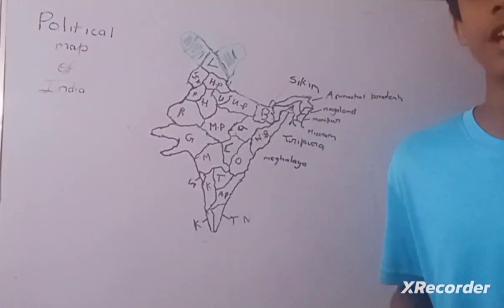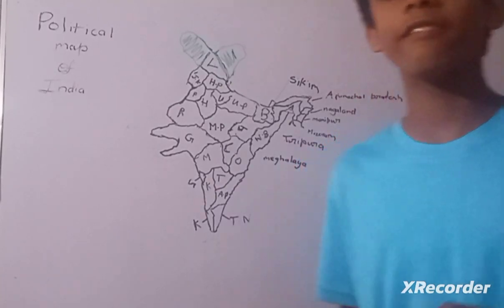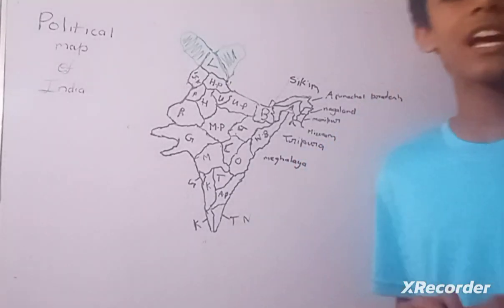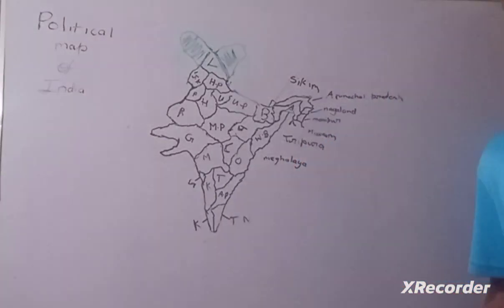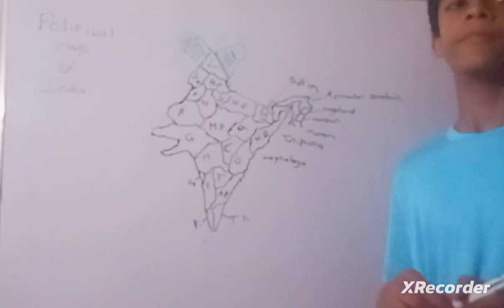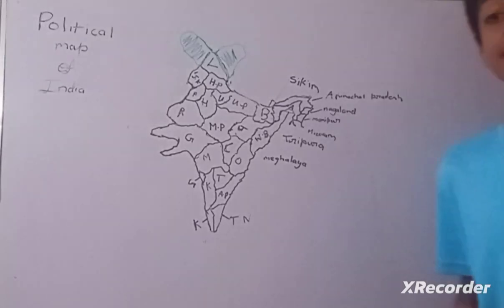Hello friends, welcome back to my channel Learn with AM. So today we will discuss about the political map of India and the specialties about each state and union territory. First, India's capital is Delhi, then India has 28 states and 8 union territories.